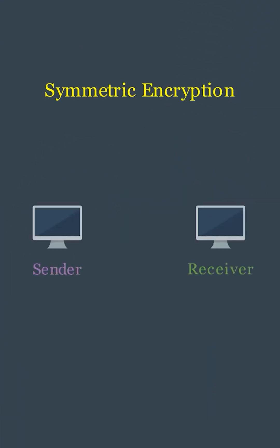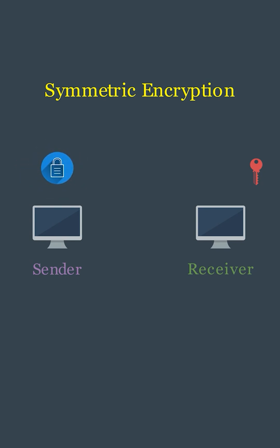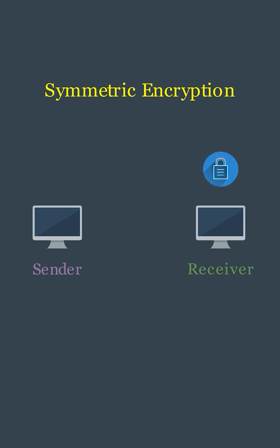In symmetric encryption, one key is generated and distributed to both the sender and the receiver via some key distribution protocol. The sender uses the key to encrypt a file that it sends, and the receiver uses the same key to decrypt the file. The word symmetric represents the fact that both the encryption and decryption are being done by the same key.